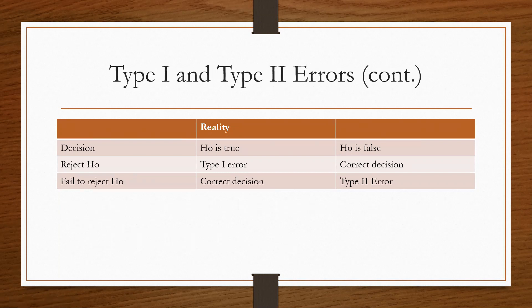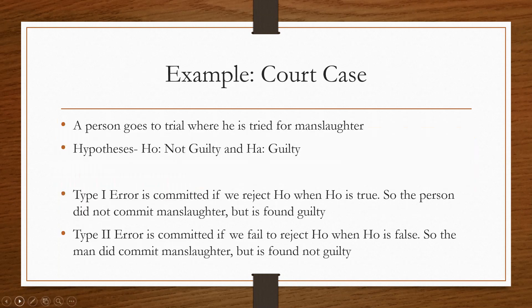This is just kind of a real-world example. I'm just going to use the example of someone going to trial. Person goes to trial where they're charged for manslaughter. The null hypothesis would be that they're not guilty and the alternative hypothesis is that they are guilty. So a Type I error would be committed if we reject the null hypothesis when the null hypothesis is true. Basically, what we're saying is this person did not commit manslaughter but they're still found guilty anyway.